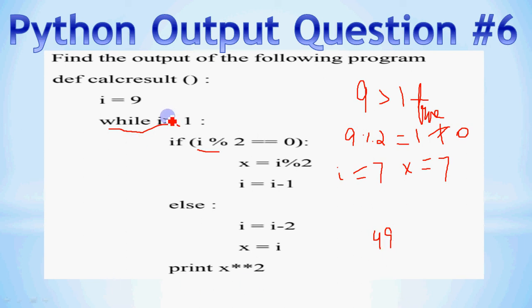Phir upar jaye, upar ja ke check kiya ki i greater than 1. Abhi filhal i 7 ho chuka hai. So 7 greater than 1 true hai. Yahan aayenge, 7 mod 2 is again 1, 7 mod 2 1 hota hai, kyunki 3 2's are 6, remainder bacha 1. So ye bhi false hai, toh hum else mein jayenge. I phir se decrease ho jayega, toh abhi 7 ki jagah per 5 ho jayega.